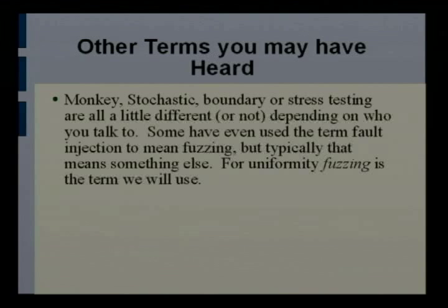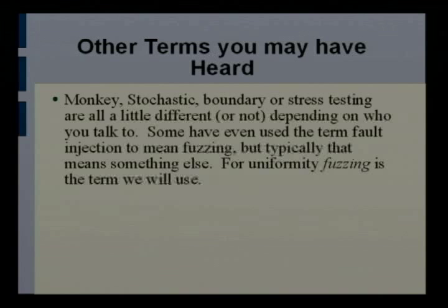There are sort of two industries that are now colliding, and I think software will be at its best when the QA world and security researchers doing fuzzing come together. The QA guys tend to use words like robustness testing, negative testing, stochastic, monkey testing, boundary stress. Some of these are slightly different but used in the same context. I'm just going to use the word fuzzing today.